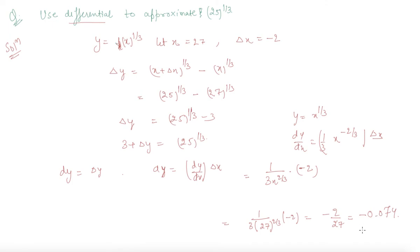So Δy is coming out to be this. So from here using this equation, 25 raised to power 1/3 is 3 plus Δy, which equals 3 - 2/27, approximately equals 2.926. So this is the value of 25 cubed.